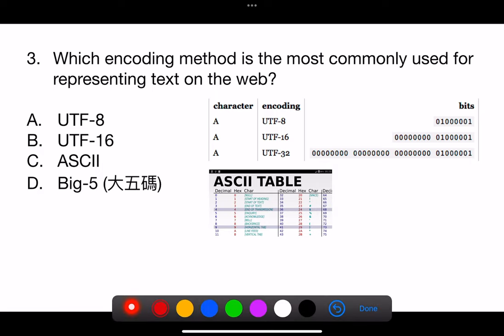Question 3. Which encoding method is the most commonly used for representing text on the web? A. UTF-8. B. UTF-16. C. ASCII. D. Big 5.